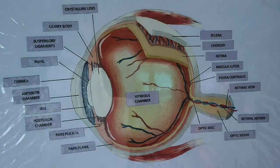The third coating is the retina. The retina is the neural or nervous coating of the eye. It has a lot of nerves and nerve endings.